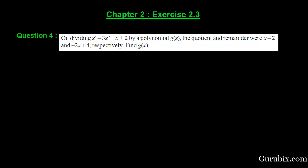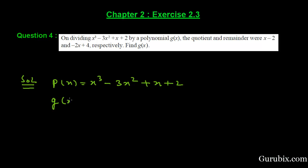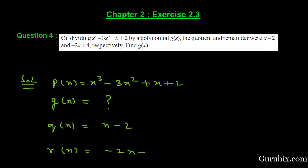Let us see how to solve this question. First, we collect the given information. The dividend p(x) is x cubed minus 3x squared plus x plus 2. We have to find the divisor g(x). The quotient q(x) is given as x minus 2, and the remainder r(x) is given as minus 2x plus 4. We have collected all the things.